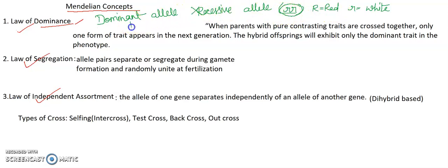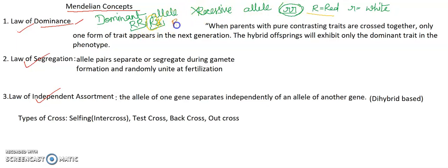Aur agar hamesha dominant allele ki baat karein, to capital R capital R ho sakta hai, capital R small r ho sakta hai. Ye homozygous dominant hai, aur ye homozygous recessive hai. Lekin dono hi condition mein, although yahan pe recessive allele hai, lekin recessive allele in the presence of dominant allele apne aap ko express nahi hone deti, aur iska phenotype wahi aayega jo capital R ka hoga. Iska matlab, yahan pe dono ka phenotype red color ka hoga, aur yahan ka phenotype white hoga.